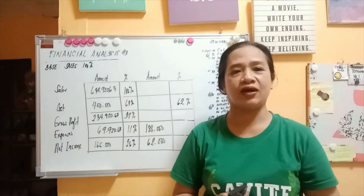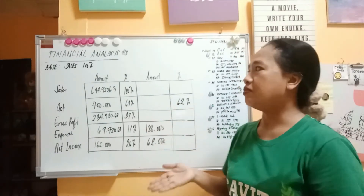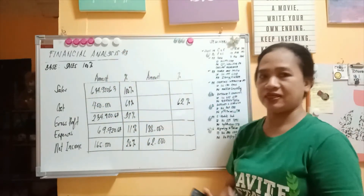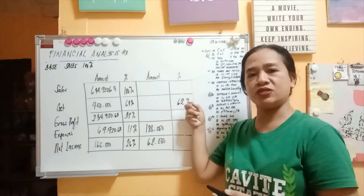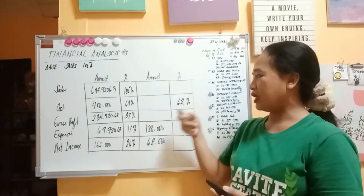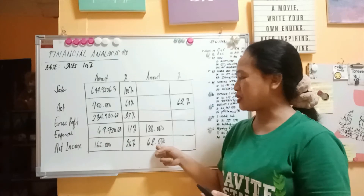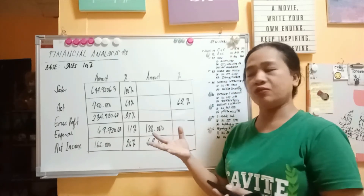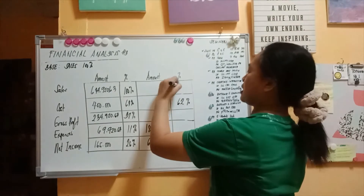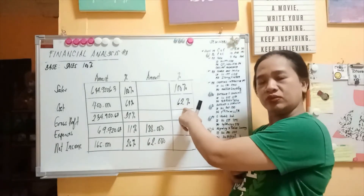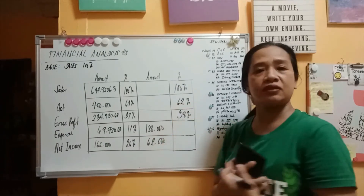Let me give you another example for you to understand more on financial analysis number 3. The given here is the percentage of cost, which is 62%, the amount of expenses, which is 188,000, and the amount of net income, which is 62,000. We are going to get first the percentage of gross profit: 100% minus 62% gives a gross profit percentage of 38%.